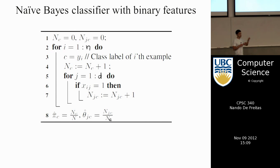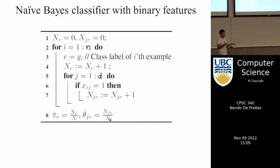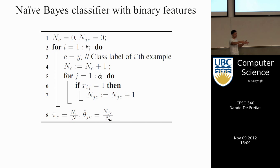By learning these two probabilities — this is essentially the coin probability — except instead of having one coin, we actually have D coins, one for each word. And we also have D coins per class, so we have a total of C times D coins. But that's what the model is: it's just flipping many coins.